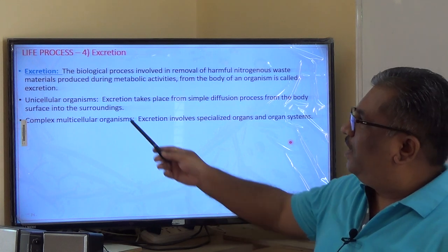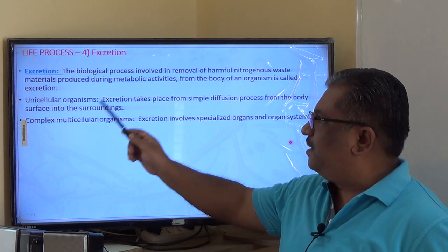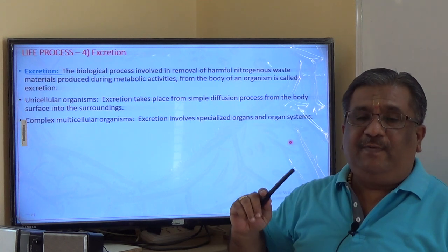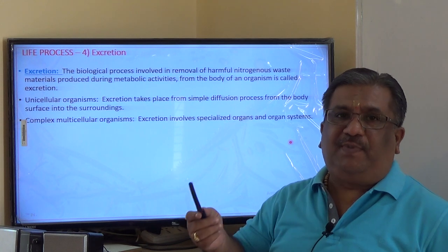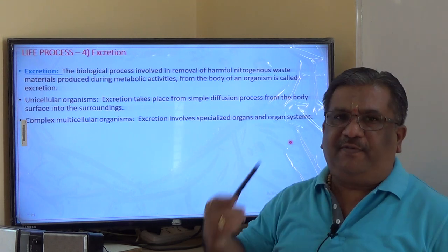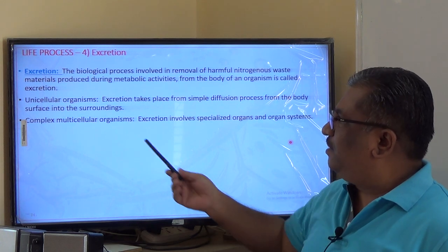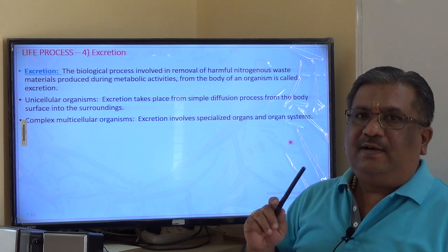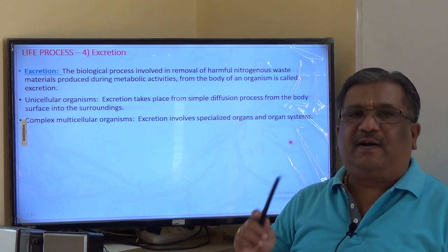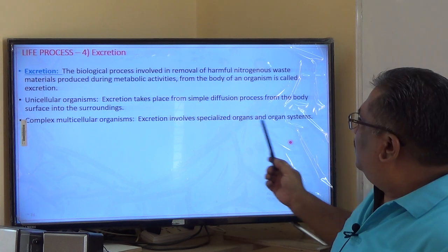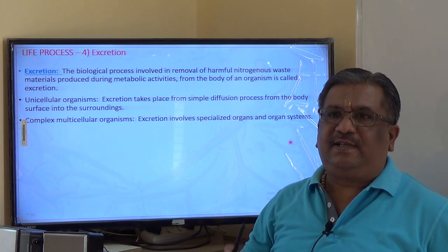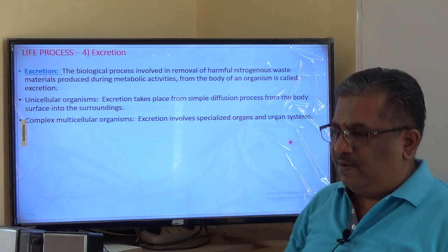In simple terms, comparing unicellular and multicellular organisms: in unicellular organisms like amoeba, excretion takes place by simple diffusion, just as ingestion of food also occurs by simple diffusion. In complex multicellular organisms, however, specific organ systems are involved in removal of waste materials from the body, and those organ systems are called excretory systems.